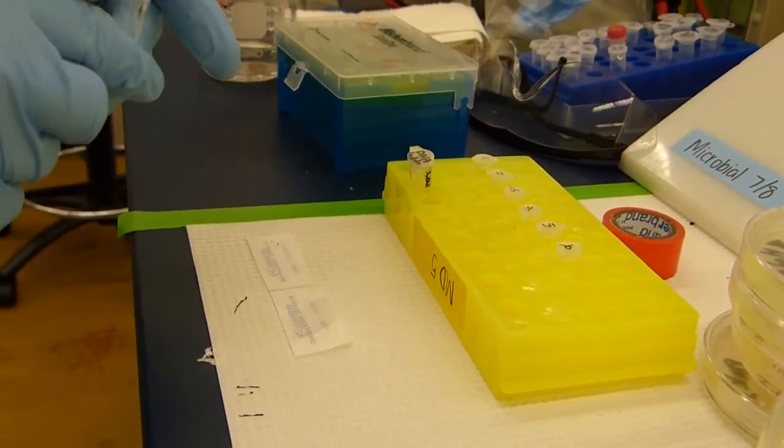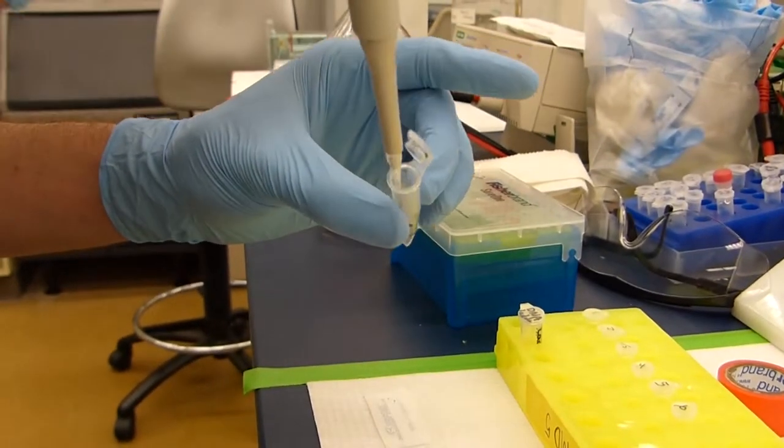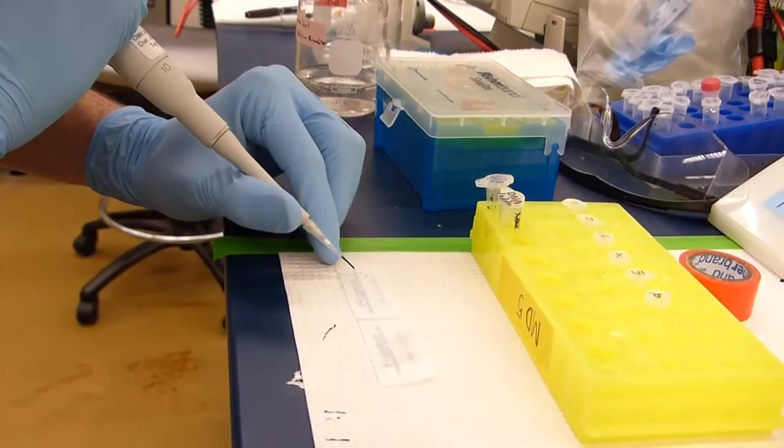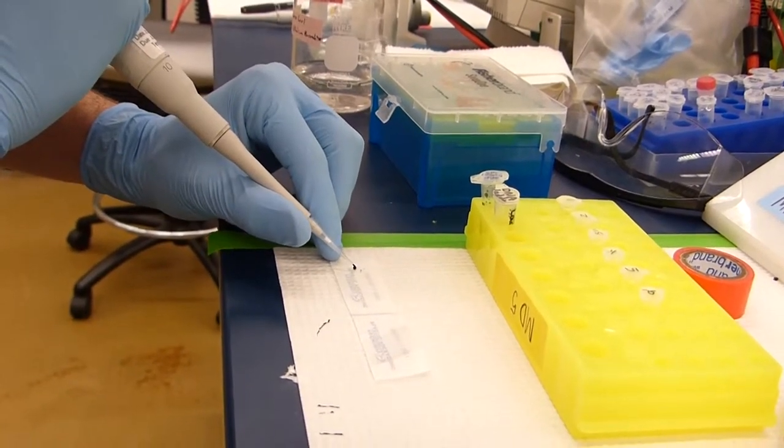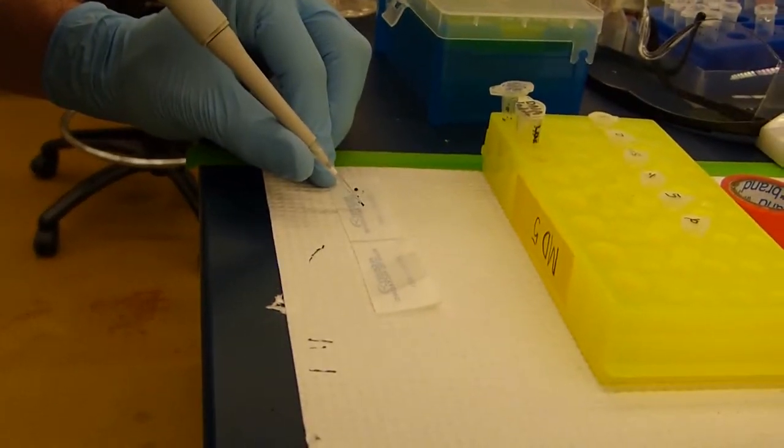From here, you will make small dots of the loading dye on your strip of parafilm. You can keep the pipette set to 3 microliters and usually get 3 or 4 small dots out of about 3 microliters. Also be careful to space these out as you do not want to risk mixing them as you go along.